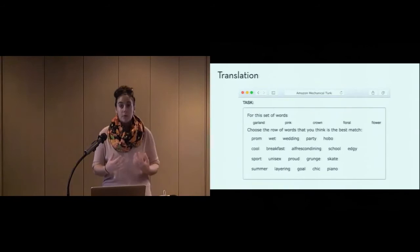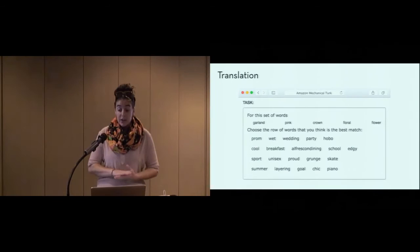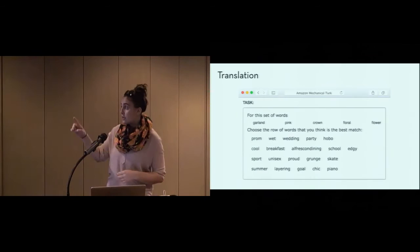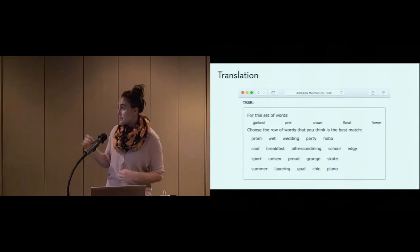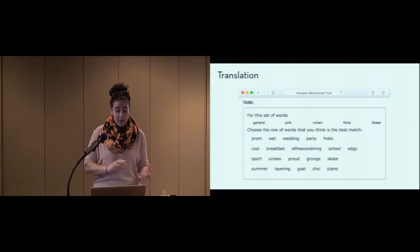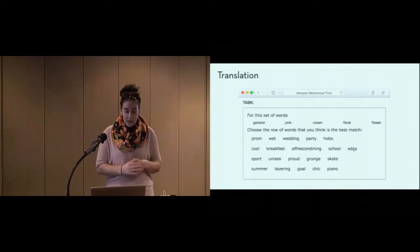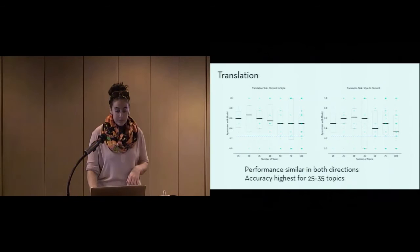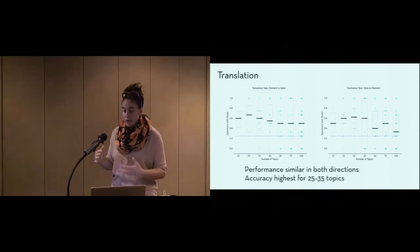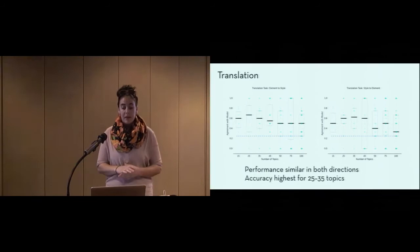So, we then use a second translation validation test to set the actual number of topics for our applications. In this task, we show users a set of words in the element language, here garland, pink, crown, floral, and flower, and ask them to pick the row of style words, here prom, wedding, the row with prom, wedding, and party, that are the best match compared to the others, like the row with proud, grunge, and skate. And vice versa, with prompts in the style words, selecting a row of element words. Here, we find that the performance is similar in both directions, again, generally well above a random baseline, again shown by the blue dotted line, with the overall peak performance at 35 topics.